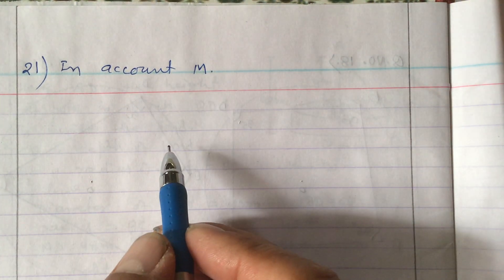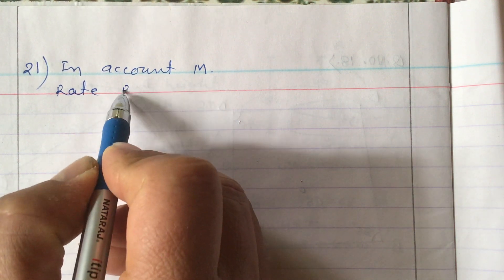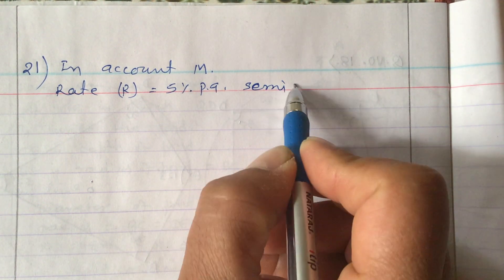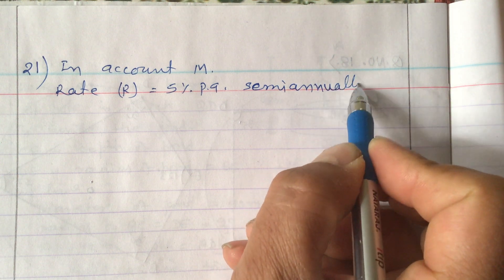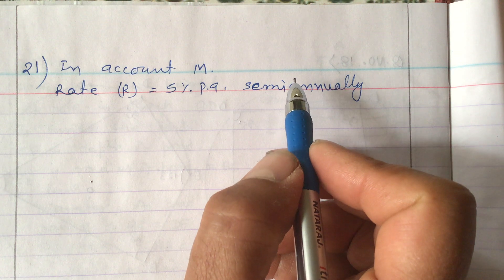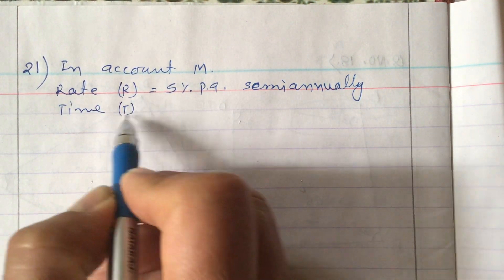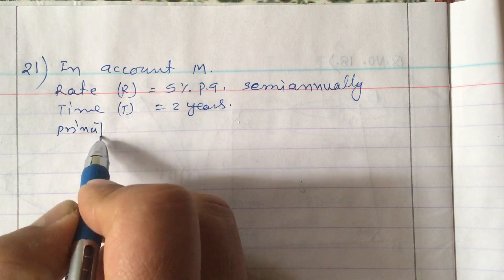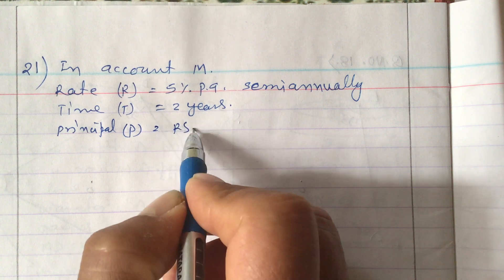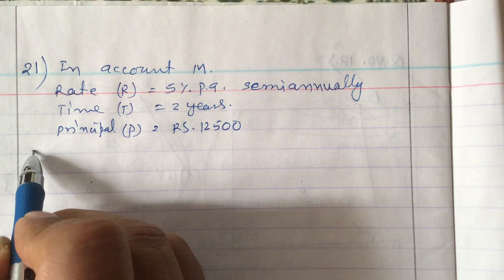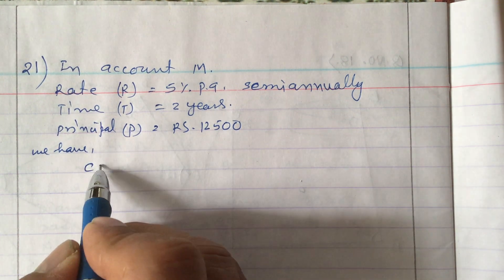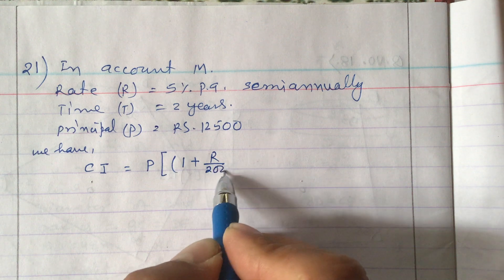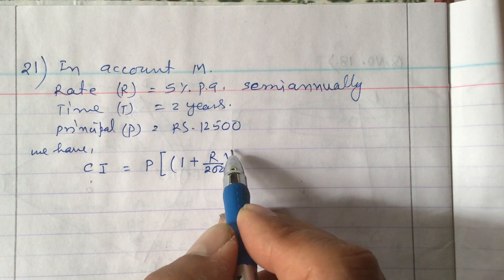In account M, the rate of interest R is 5% per annum, compounded semi-annually. Time T equals 2 years, and principal P equals rupees 12,500. Now let us calculate compound interest. The formula is: CI = P × [(1 + R/200)^(2T) − 1], because it is semi-annually, we use R/200 and the power is 2T.